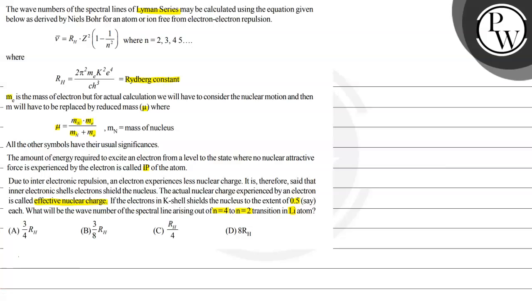So here the key concept is electronic spectrum. As we know nu bar equals RH multiplied by 1 by n1 square minus 1 by n2 square. n2 is the higher level where the transition is happening, multiplied by z square. But here we are taking lithium atom and lithium atom is a multi-electronic species. So we consider z effective.